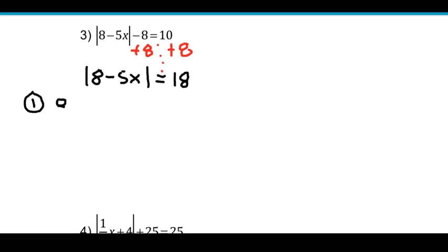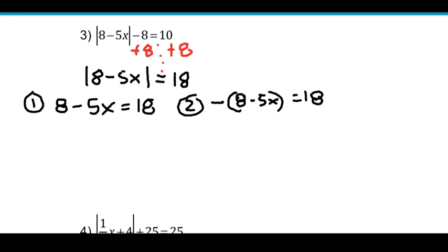Case 1, just take off the bars. Everything else stays the same: 8 minus 5x equals 18. In case 2, put a minus sign on one side of your equal sign. This time I'm going to put my minus on the left side. So I do take off the bars, but I need to make sure I keep the left side grouped because everything was in an absolute value quantity. So it doesn't matter which side of the equal sign you put the minus sign on, just be careful and use parentheses when you need them. Let's solve equation 1.